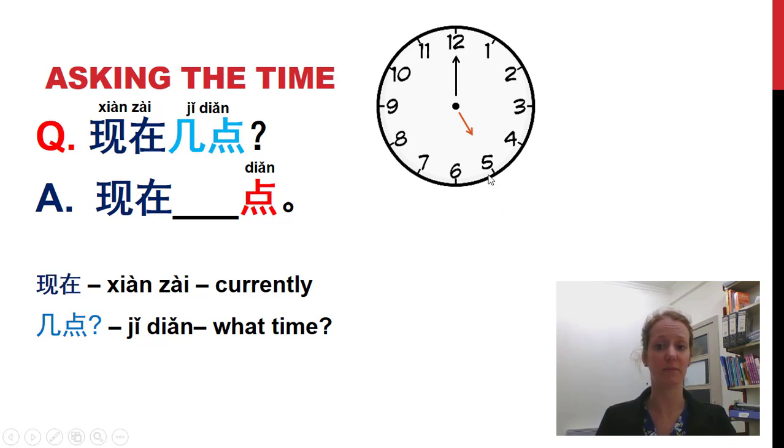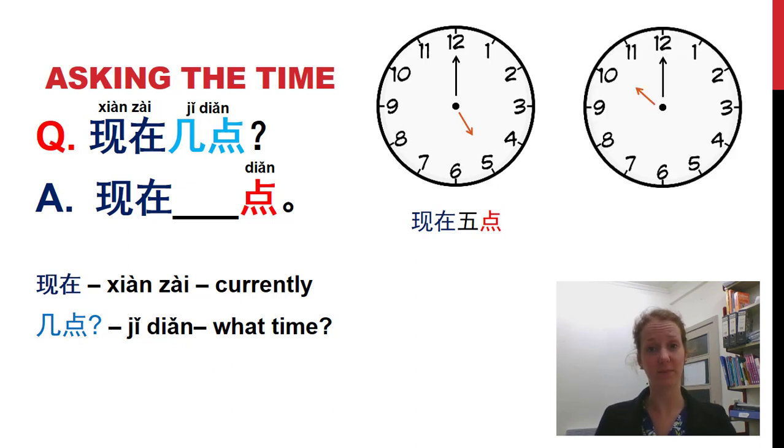For example, 現在幾點? Little hand is at the 5. 現在五點, 對嗎? 現在幾點? 現在十點. So I'm asking the question what time is it right now? So I'm saying right now it is 5 o'clock and right now it is 10 o'clock. If I just asked 幾點 looking at this clock, you wouldn't need to use the 現在. I'm just asking what's the time.